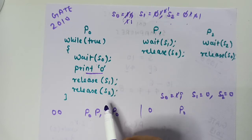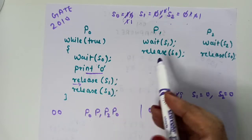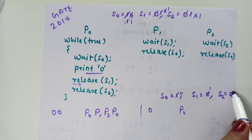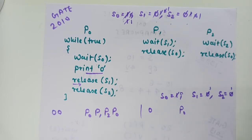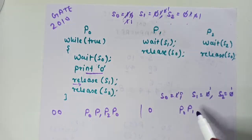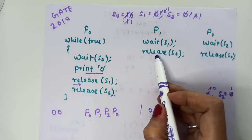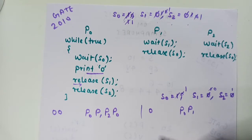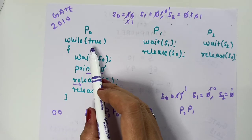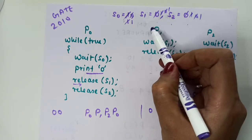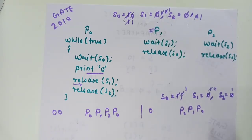After releasing S1, remember there is context switching. P1 gets a chance — it releases S1 and then S2, so S1 becomes 1, S2 becomes 1. This means P1 and P2 can proceed. If P1 gets a chance, it performs wait on S1, decrementing it to 0, and releases S0 — incrementing it. P1 then executes its two statements and terminates.